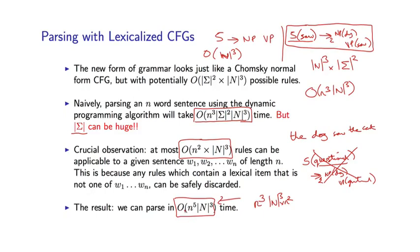That's really more of a sketch than a precise definition of the algorithm, but hopefully you'll get the idea. The important point is that you can end up parsing with these lexicalized PCFGs relatively efficiently. We now have gone from an N cubed dependence on the sentence length to an N to the fifth. That's expensive, but it's still manageable if you're careful about how you do things.